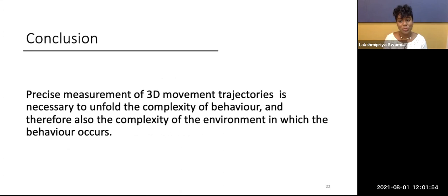So even the simplest of movements, a mouse walking at the same speed is super complex. It's more complex than we initially expected. And in order to quantify this, it is necessary to study 3D trajectories. With this, we can establish the connection between movement and environmental complexity. Therefore, in conclusion, precise measurement of 3D movement trajectories is necessary to unfold the complexity of behavior, and therefore also the complexity of the environment in which the behavior occurs.